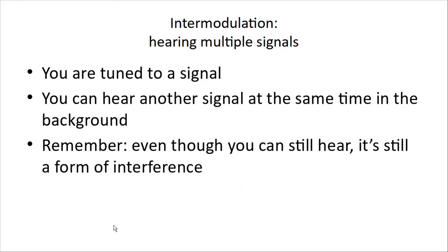Intermodulation — you're hearing multiple signals. You're tuned to a signal and you can hear another signal at the same time in the background. Remember, even though you can still hear your primary signal, it's still a form of interference — it's coming in on top of your signal.